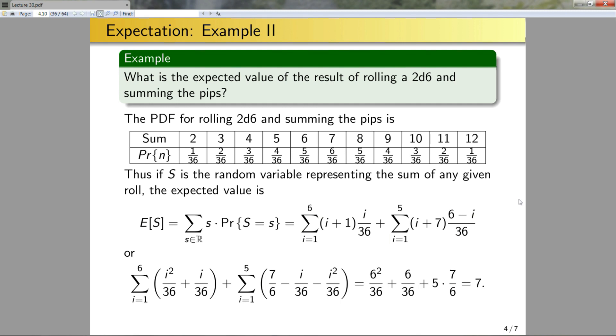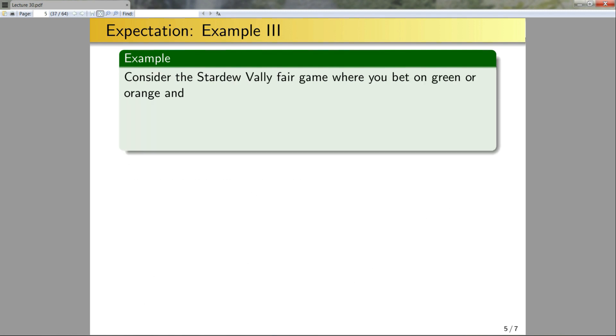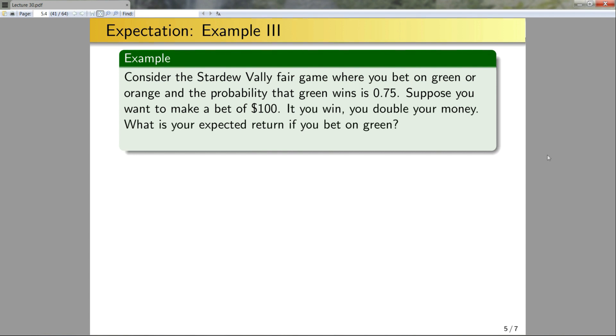Okay, so now let's look at another very important real-world example. Consider the Stardew Valley game where you bet on green or orange, and the probability that green wins is 0.75. Suppose you want to make a bet of $100 now. If you win, you double your money. What is the expected return if you bet on green? What about if you bet on orange? Okay, so now we're going to let M be a random variable representing the amount of money you will make from any given bet.